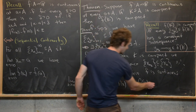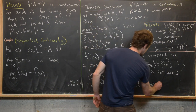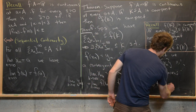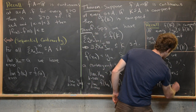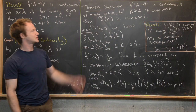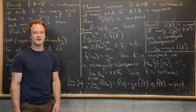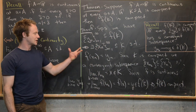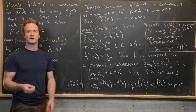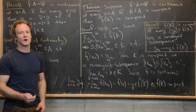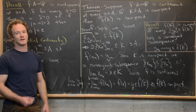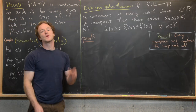So we took an arbitrary sequence and constructed a subsequence of it in f(K) that converges to something in f(K). That's exactly what we needed to show f(K) is compact. That finishes the proof of this theorem. Now let's clean this up and look at a result from calculus that follows very quickly from it.